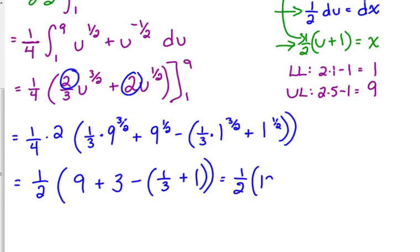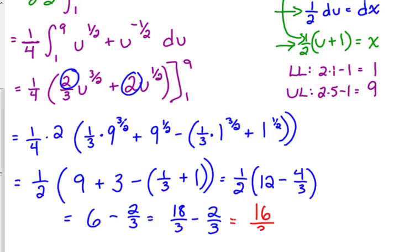So we've got 1 half of 12 minus 1 third plus 1 is 1 third plus 3 thirds. That's 4 thirds. So I'm going to go ahead and distribute the 1 half. 1 half of 12 is 6. 1 half times 4 thirds. 4 over 2 gives me 2 thirds. So that's 18 thirds minus 2 thirds, which is 16 thirds.